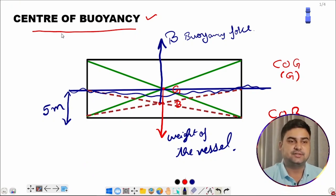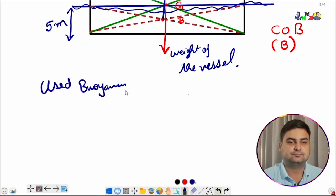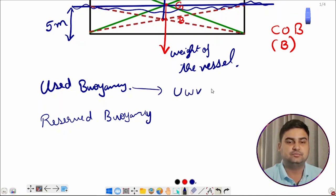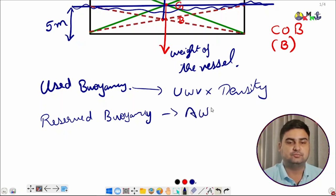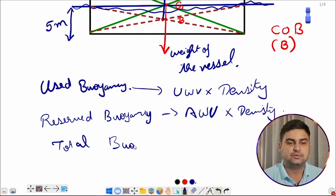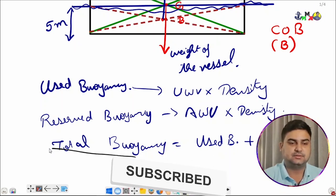There are two terms associated with buoyancy force: used buoyancy and reserved buoyancy. Used buoyancy is underwater volume multiplied by density. Reserved buoyancy is above-water volume multiplied by density — how much of the ship is empty above the waterline. Total buoyancy equals used buoyancy plus reserved buoyancy.